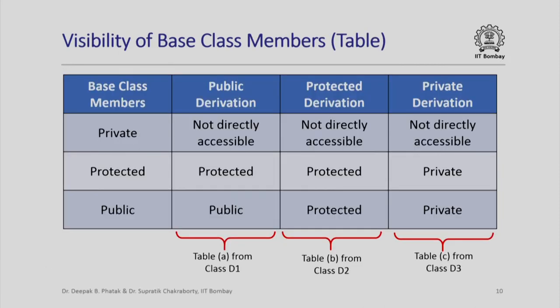This table summarizes all three previous cases and serves as a good reference when you are confused about how the combination of the derivation mode and access control specification of a base class member determines whether a particular member is accessible within a derived class and what its access control specification is in the derived class.